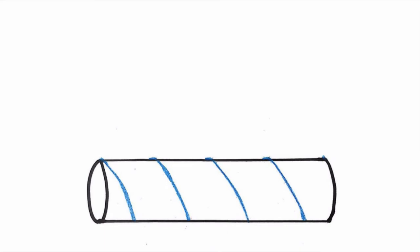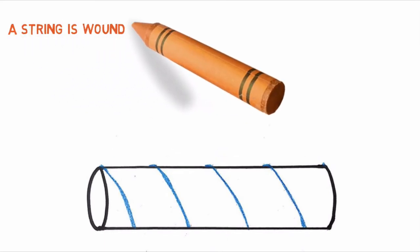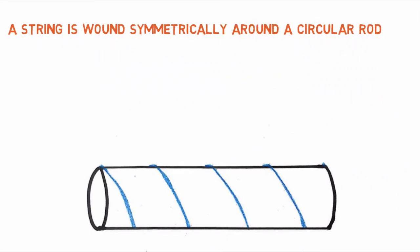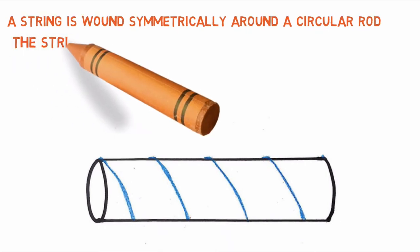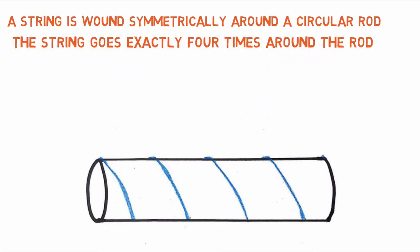So that said, here is the problem. A string is wound symmetrically around a circular rod. The string goes exactly 4 times around the rod.